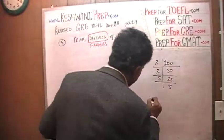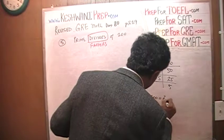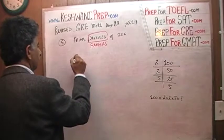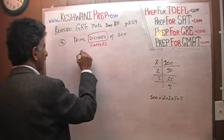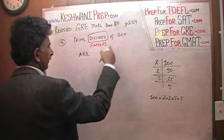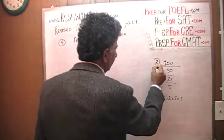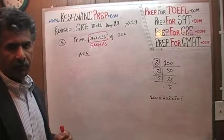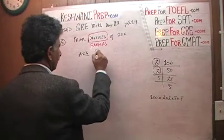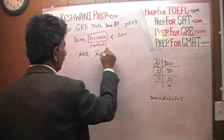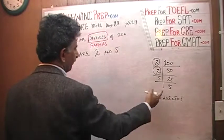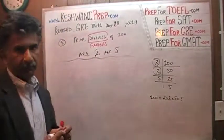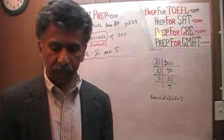That means 100 equals 2 times 2 times 5 times 5. Therefore, the prime factors of 100 are 2 and 5. The two 2's do not count twice — if something repeats, you write it once. 2 is a prime factor and 5 is a prime factor of 100. That's it. There are no other prime factors of 100; 100 has only 2 prime factors.